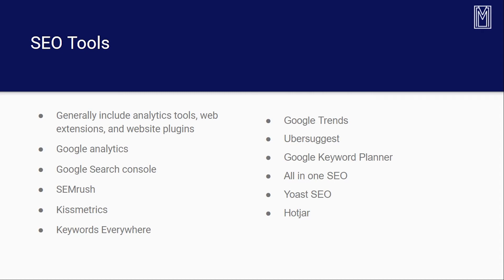Keywords Everywhere gives you a rundown of keywords. You can link it to your browser — I use Chrome — by installing it as an extension. You install the API, which then tracks whatever you search on the search engine. It analyzes the keyword and gives you a list of related keywords, including long-tail keywords, short-tail keywords, and related keywords. That's a rundown of a few SEO tools; Ahrefs and Moz are also good ones not listed here.